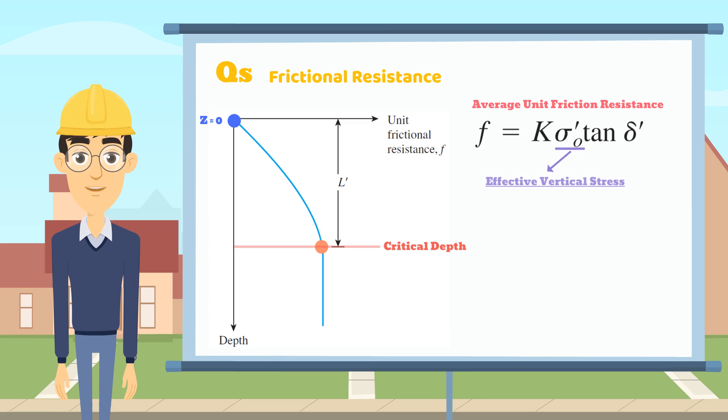This is the effective vertical stress. We only need to find the vertical stress at the critical depth level. And here is the friction angle between soil and pile, which is around 0.5 to 0.8 times the soil friction angle.